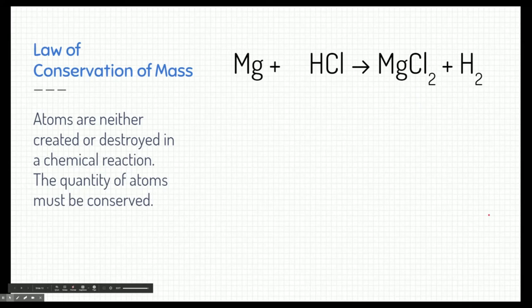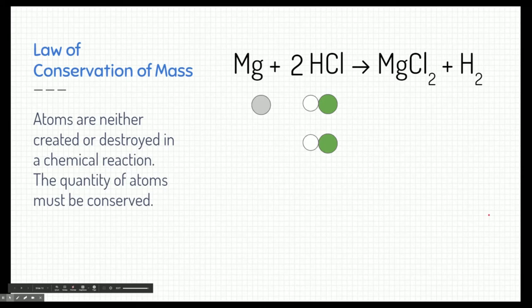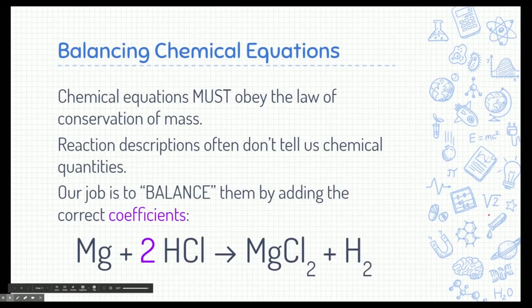Let's start over and think about the quantities of particles. One thing we haven't written are the coefficients. Instead of having one hydrochloric acid, what if we had two hydrochloric acid molecules? If we do this reaction now — taking the magnesium and chlorine and combining them, and the two hydrogens combining together — this makes a lot more sense and obeys the law of conservation of mass. That leads to the important concept of balancing chemical equations. Chemical equations must obey the law of conservation of mass, so it's our job to balance them by adding the correct coefficients.